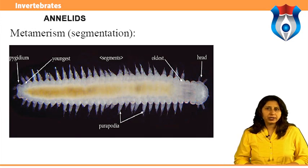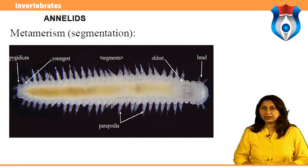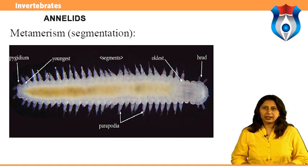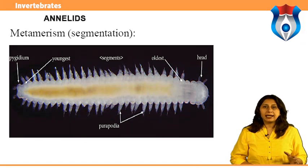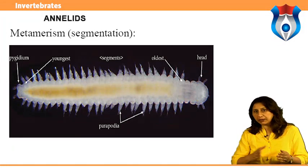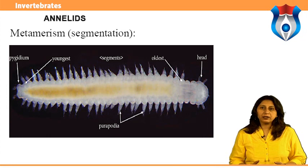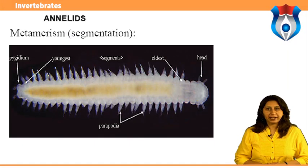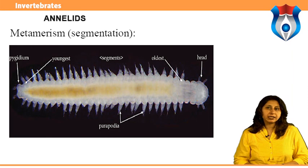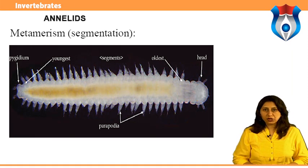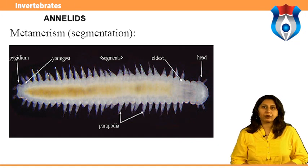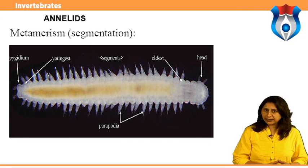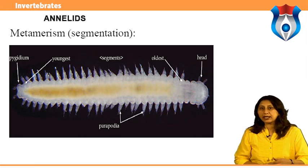The name 'annelids' comes from the Latin word annulus meaning 'a little ring,' in reference to the ring-like segments. Each segment is limited by septa dividing it from neighboring segments and has a fluid-filled cavity called a coelom. Structures such as excretory, locomotory, and respiratory organs are generally repeated in each segment. Segments are formed sequentially from growth zones at the posterior end, so the youngest segment is always the most posterior.